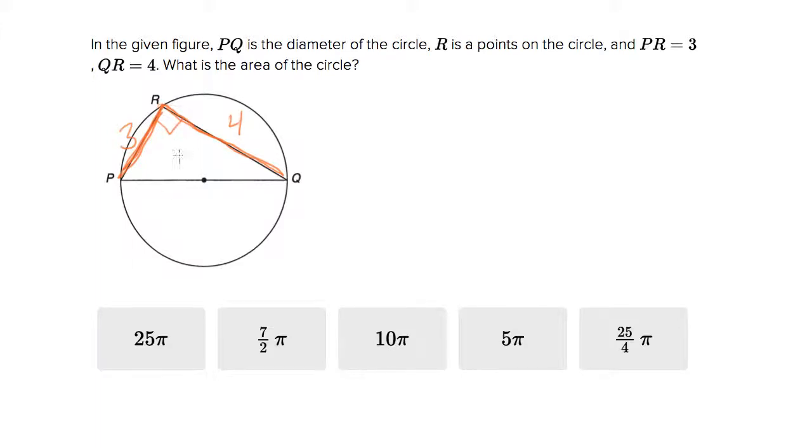Once you know that, this becomes a pretty quick problem if you also know the Pythagorean triple 3-4-5. Two of the sides are 3 and 4, so the third side needs to be 5.